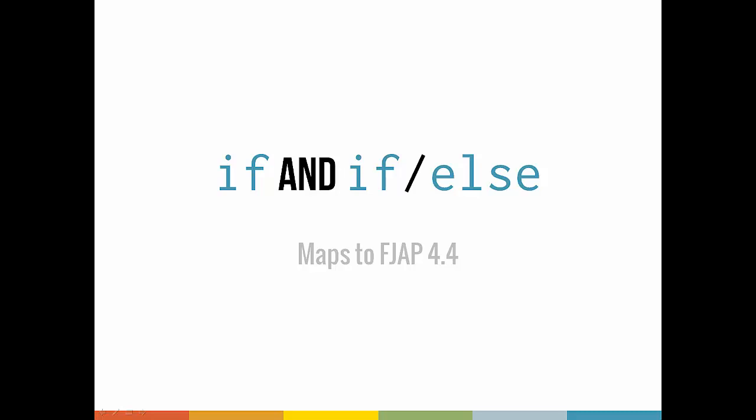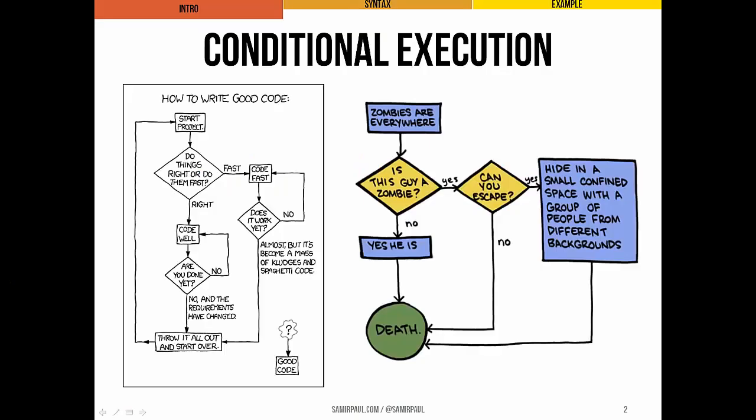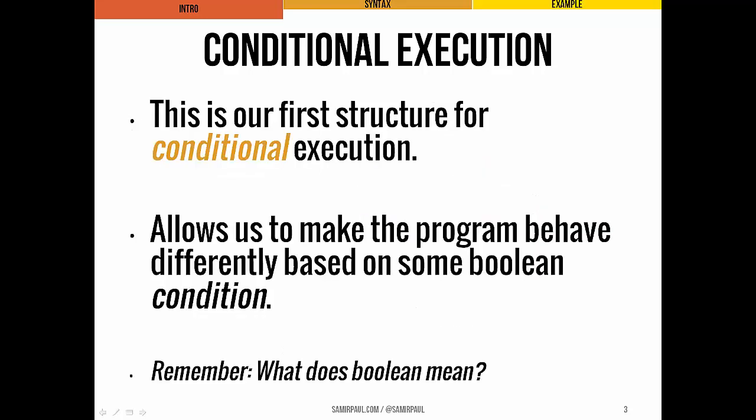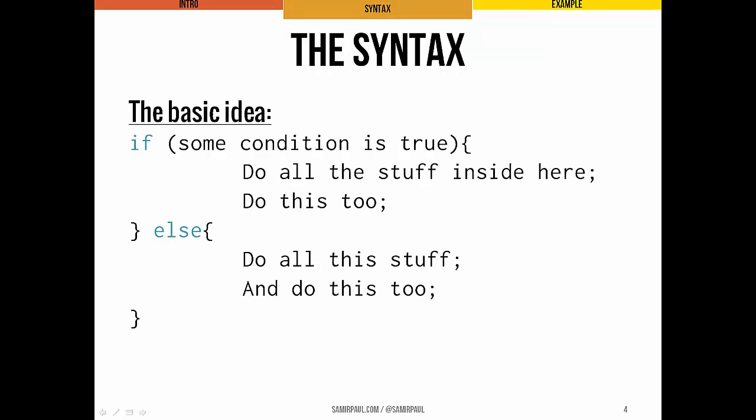Up until now, all of the programs we've been running have essentially been sets of deterministic, static instructions — lines of code that run the same no matter what. It turns out that this isn't really useful. Most of the time, we want to be able to make a program behave differently based on user input, based on different circumstances. That gets at the idea of conditional execution. We want to use boolean true or false conditions to make a program do different things based on circumstances.